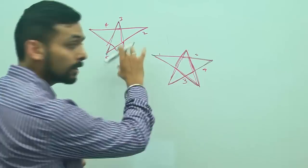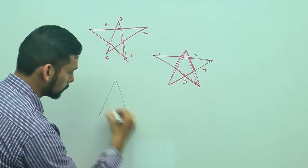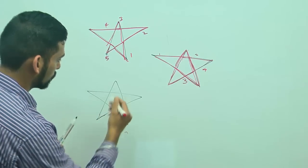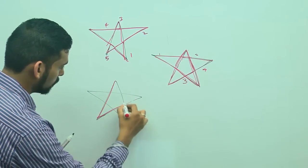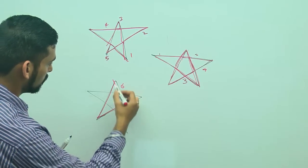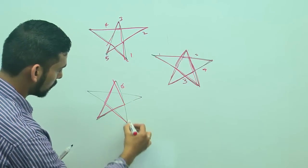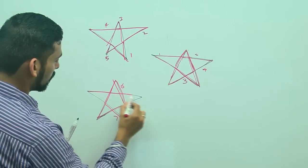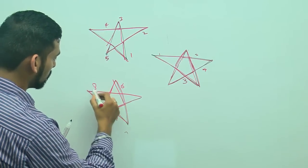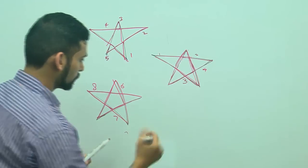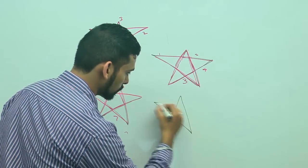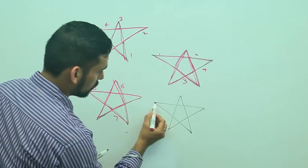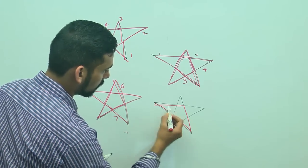So, 5 triangles plus this one, triangle number 6. Conversely, this one, triangle number 7, this inverted triangle, triangle number 8 and we have triangle number 9.